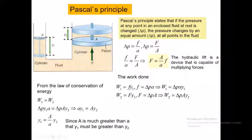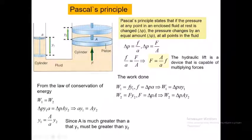In the ideal case we have conservation of energy: work done pushing the smaller piston down equals work done lifting the larger piston up. Since A is much greater than a, the displacement Y1 on the small side must be greater than Y2 on the large side. This is the hydraulic lift, capable of multiplying force.